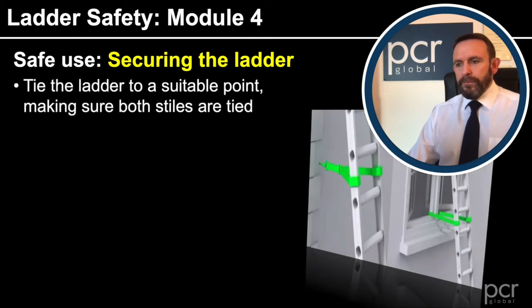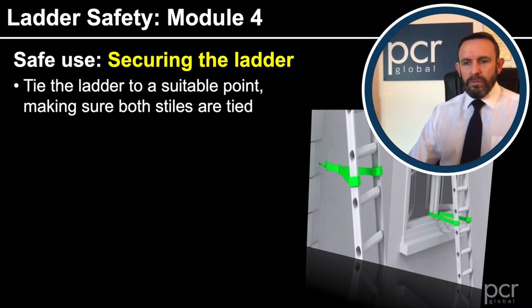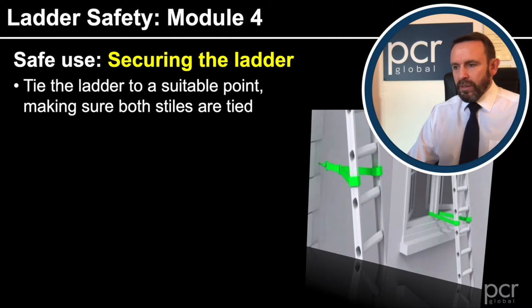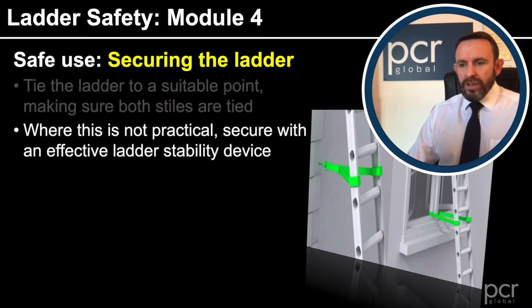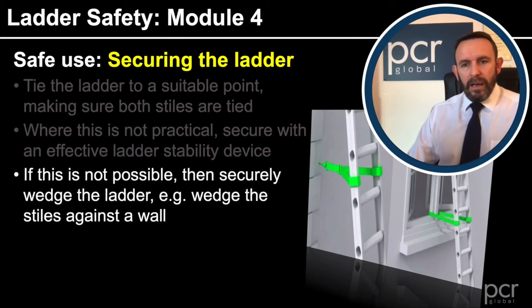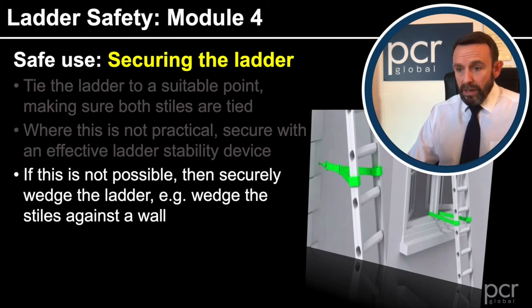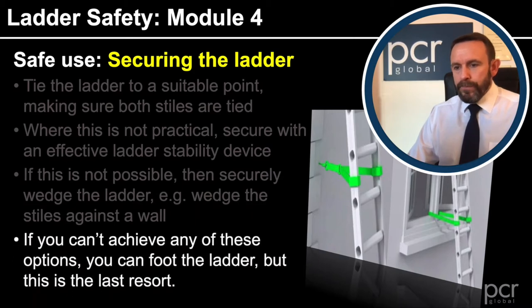Securing the ladder — as can be seen from the photographs, tie the ladder to a suitable point and make sure both stiles are tied. Where this is not practical, secure with an effective ladder stability device. If this is not possible, securely wedge the ladder against the stiles, against a wall. And if you can't achieve any of these, then you can foot the ladder as a last resort.